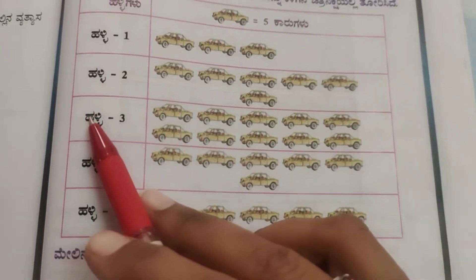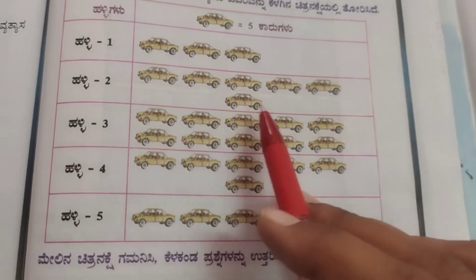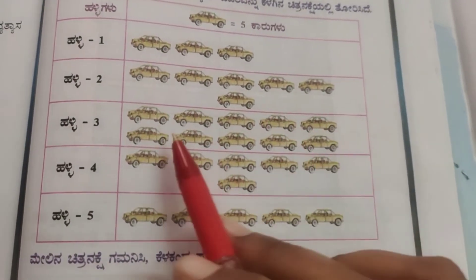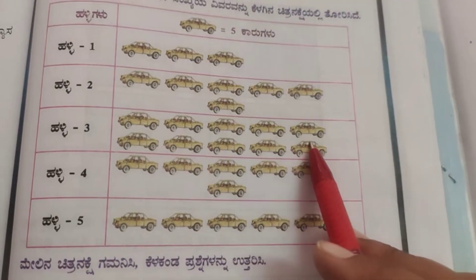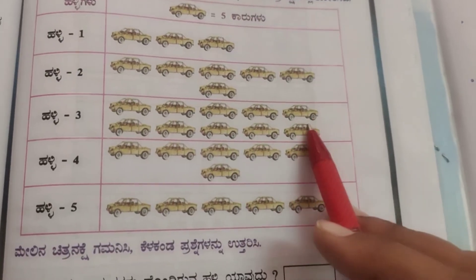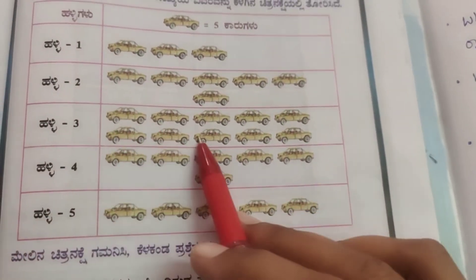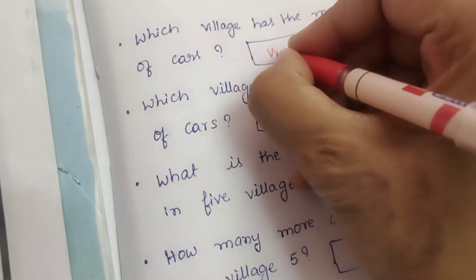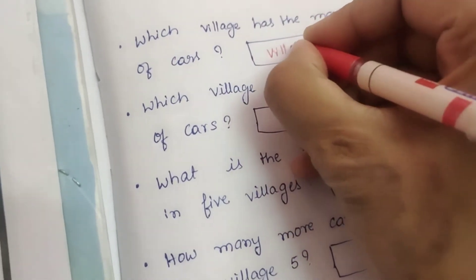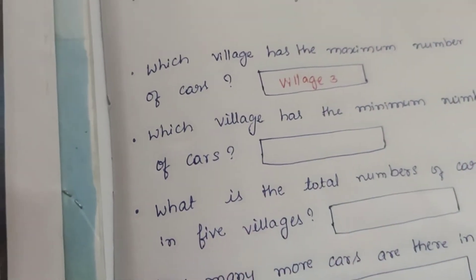First question: Which village has the maximum number of cars? Village 3 has 10 pictures, so 10 times 5 equals 50 cars. Village 3 has the maximum number of cars.